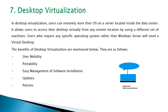The seventh type is desktop virtualization, where the user can remotely store the operating system on a server inside the data center, allowing access to their desktop virtually from any remote location using different machines. Examples include PellNet. Benefits of desktop virtualization include user mobility, portability, and user management of software installation, updates, and patches.